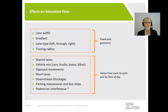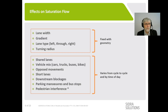Saturation flow is not fixed and not the same for every lane. It's worth subdividing these effects into those that are fixed with the geometry and won't change cycle to cycle — such as lane width, gradient, and whether it's a turning lane and how sharp that turn is — and those that vary from cycle to cycle: the shared lane effect, mix of vehicles, heavy vehicles, bicycles, opposed movements, the short lane effect, and downstream blockages.